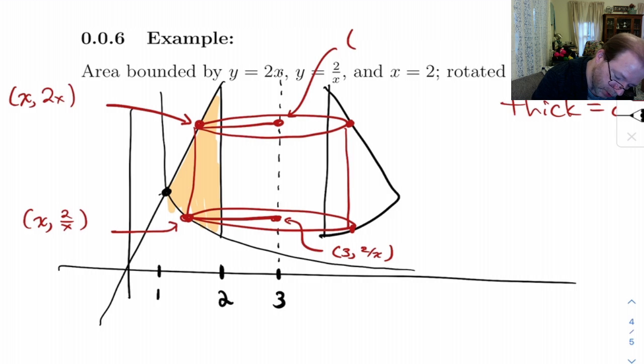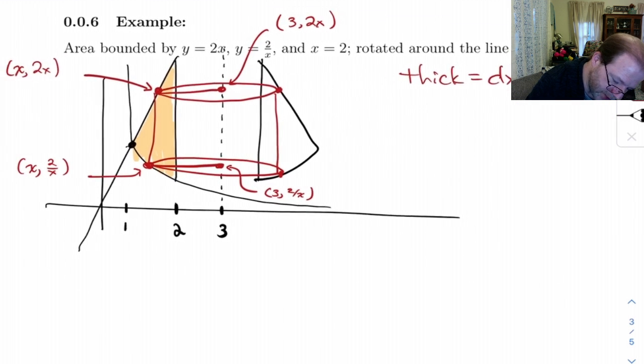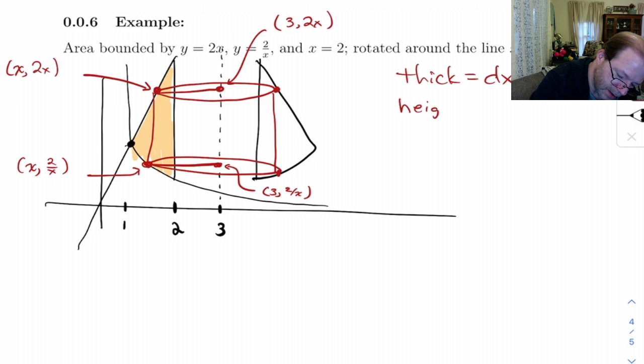Now, if I wanted to, I could come up here for this point too, although it's a little redundant once we've done this. But the coordinates to this point, the x-coordinate is going to be 3, and the y-coordinate is going to be 2x. So we can read off of here, the thickness is dx, the height is the difference in the y-coordinates. So 2x minus 2 over x. And the radius is the difference in the x-coordinate of this point and this point. So it's going to be 3 minus x.